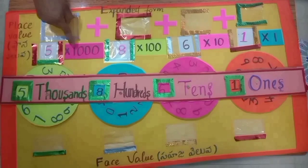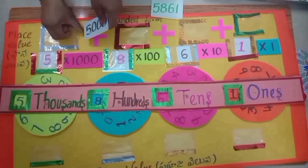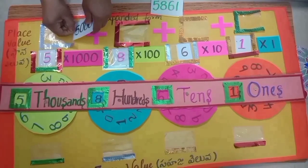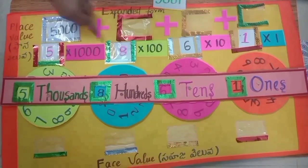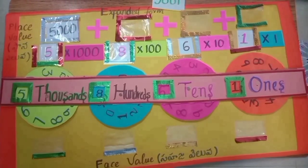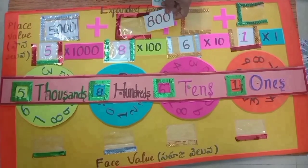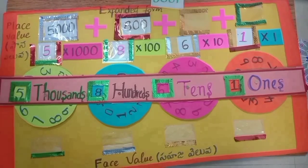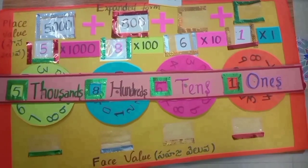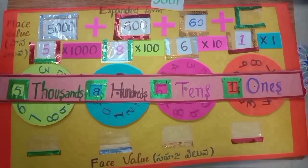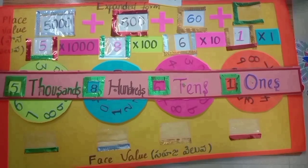5 into 1000 is equal to 5000. 8 into 100 is equal to 800. 6 into 10 is equal to 60. 1 into 1 is equal to 1.